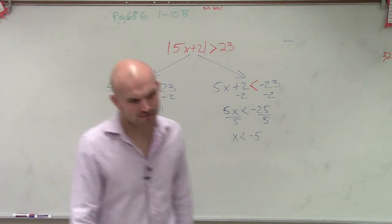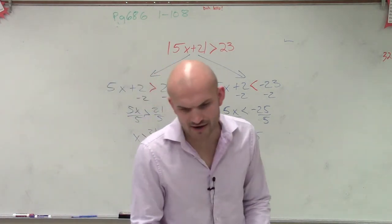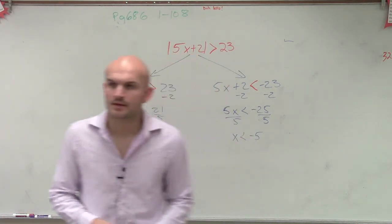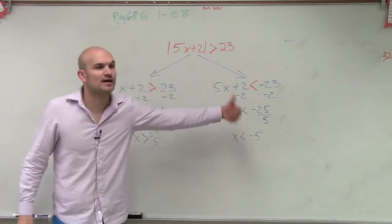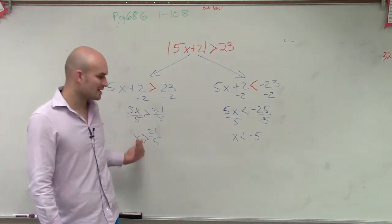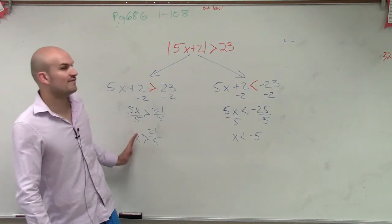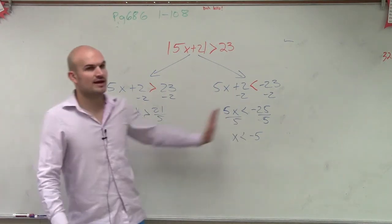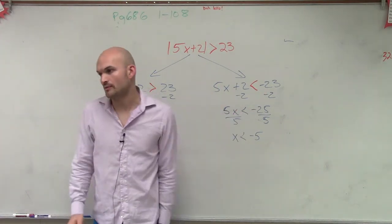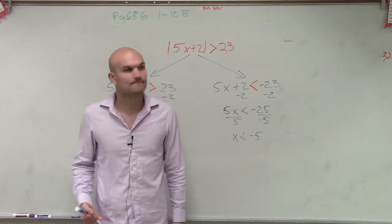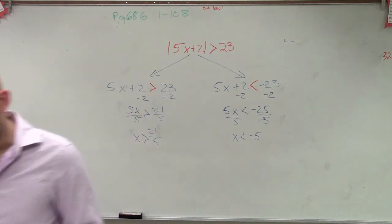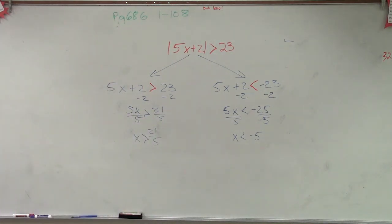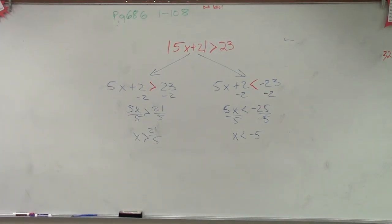Does it ask to graph it? It just has to solve for it. But if you were to graph it, you'd know that all values less than negative 5 and all values greater than 21 over 5 would be included. So when you guys return, I'll go over that.